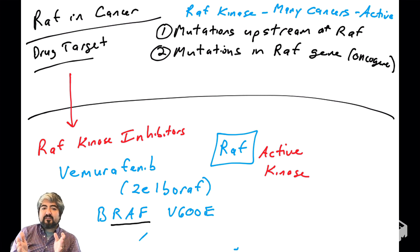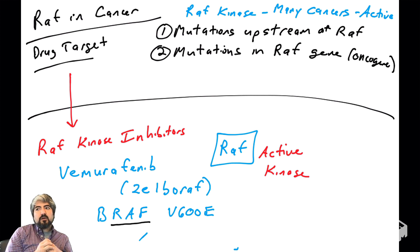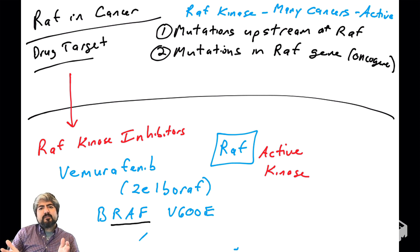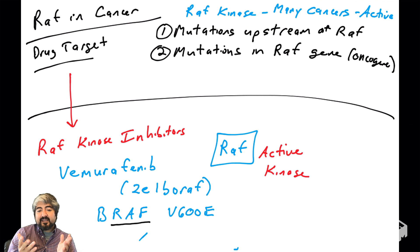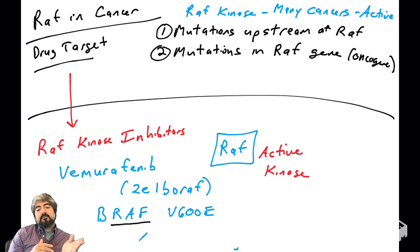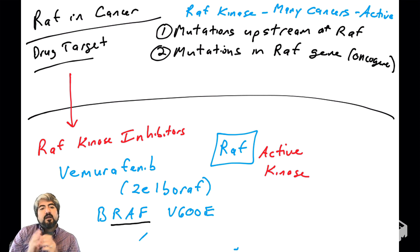The brand name for Vemurafenib is Zelboraf. If you investigate the mechanism of action of this drug, it tells you it is a kinase inhibitor. The literature refers to it as a BRAF V600E inhibitor — BRAF is simply B-RAF, and V600E refers to the valine-to-glutamic-acid mutation at amino acid number 600. So that is RAF and the mutations in RAF.